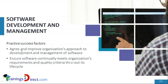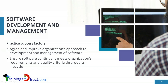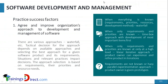Now the Practice Success Factors. The term 'approach' appears again — as mentioned before, you will see it in the first PSF for almost every practice. The first PSF is: agree and improve the organization's approach to development and management of software. The second PSF is that the organization's requirements and quality criteria for the software should be continually met, which means proper testing. The software itself should be properly designed and constructed, and should include features that enable better testing — for example, printing output in test mode but not in production mode.